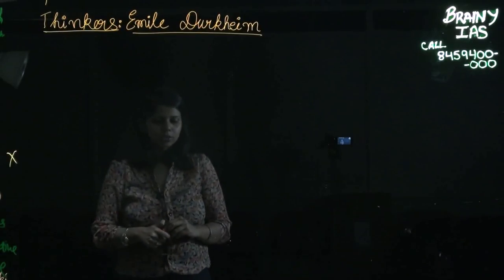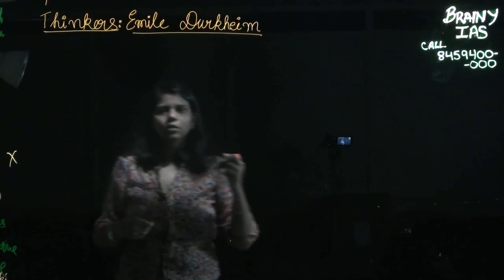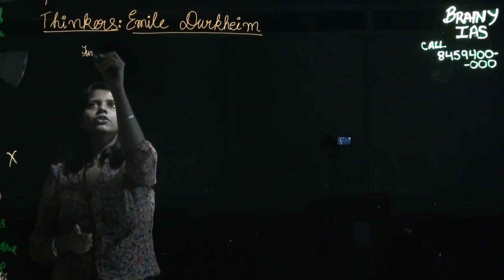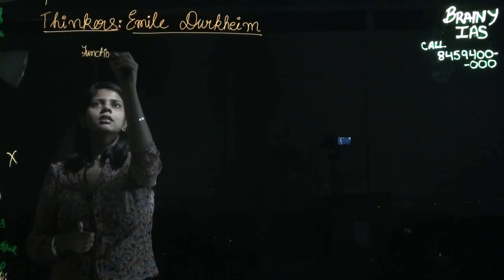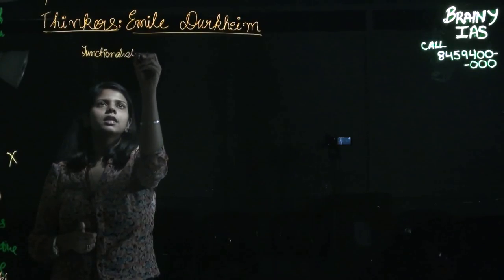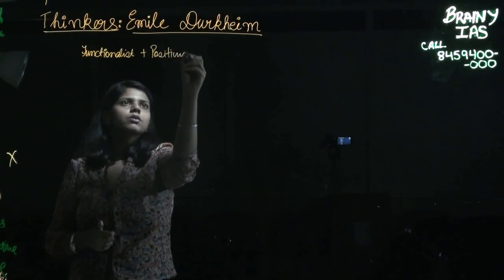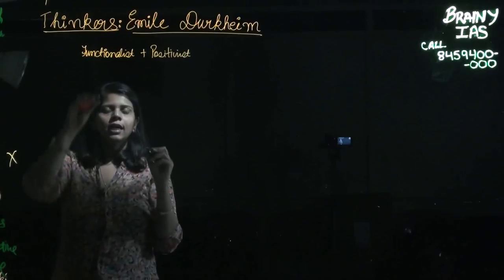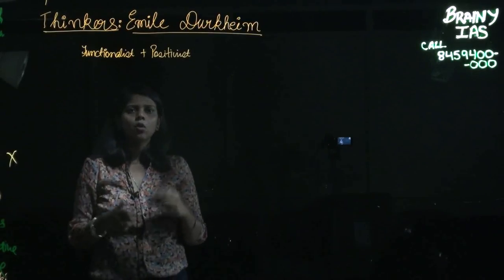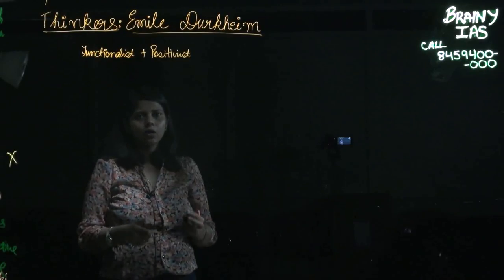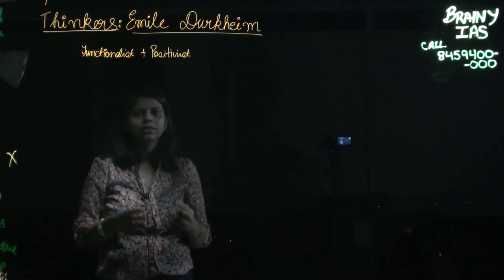Émile Durkheim basically goes down in the history of sociology as a functionalist as well as a positivist. As a functionalist, he saw utility in all the various social organs. Later we will see how he saw even utility in rate of crime.